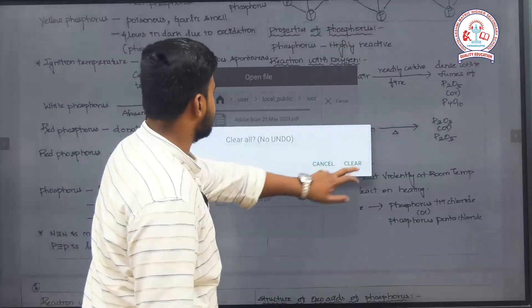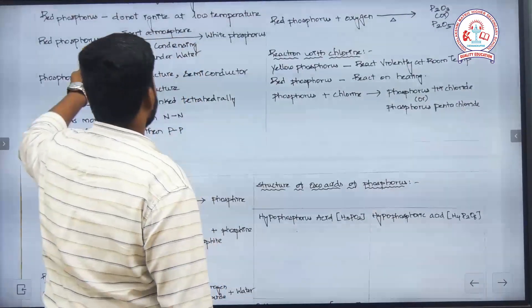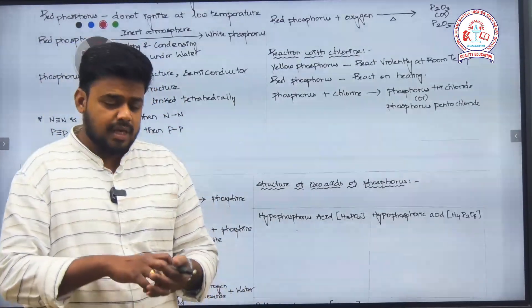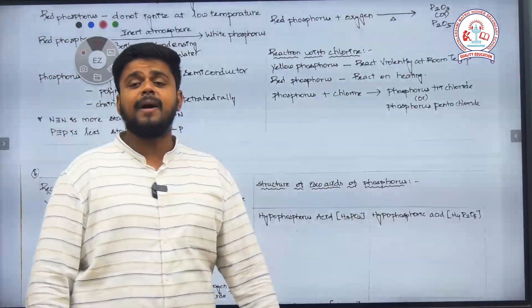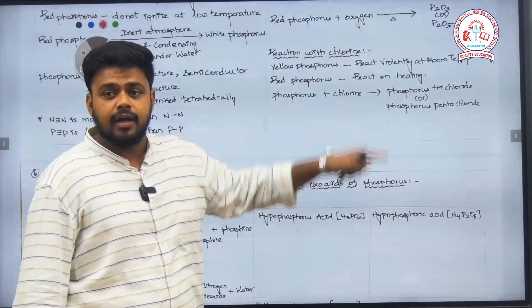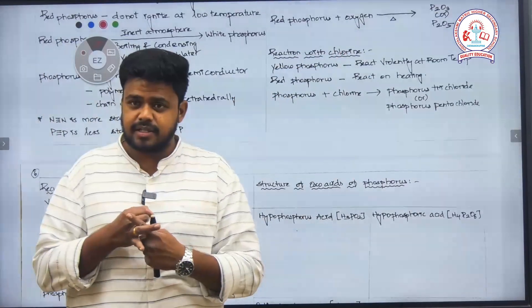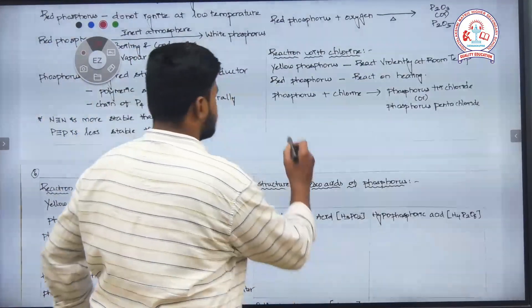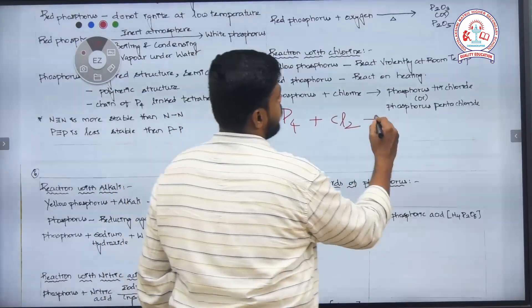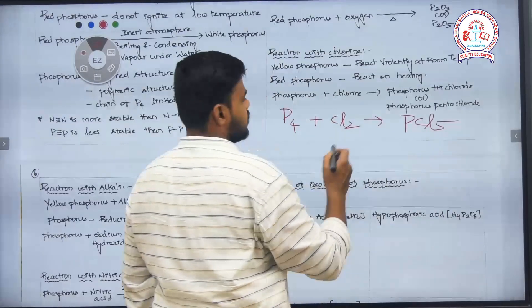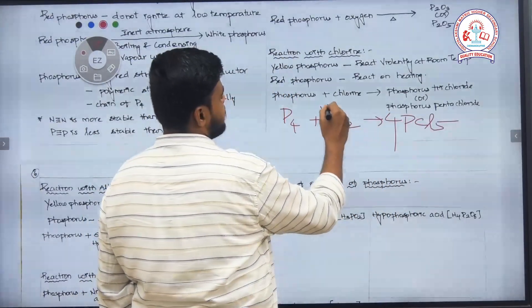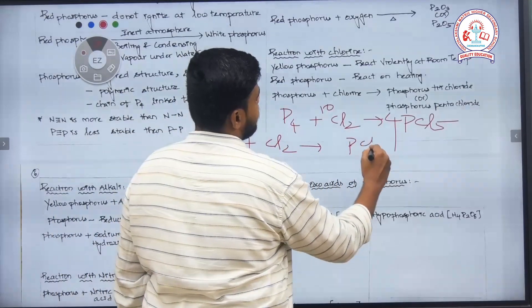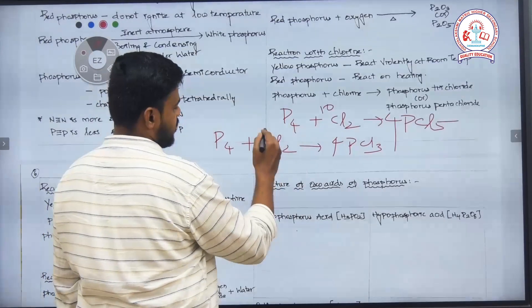Regarding the reaction with chlorine: yellow phosphorus reacts violently with chlorine at room temperature itself — an exothermic reaction takes place. Red phosphorus will react with chlorine only on heating, not at room temperature. The reaction of phosphorus with chlorine: P4 plus 10 Cl2 gives 4 PCl5 (phosphorus pentachloride). If it forms phosphorus trichloride: P4 plus 6 Cl2 gives 4 PCl3.